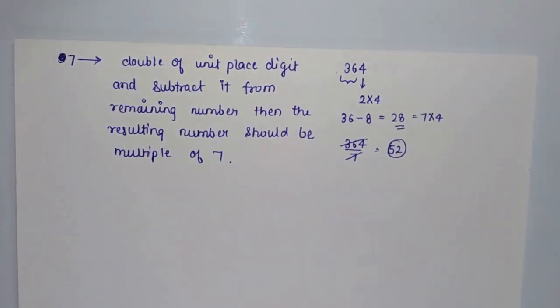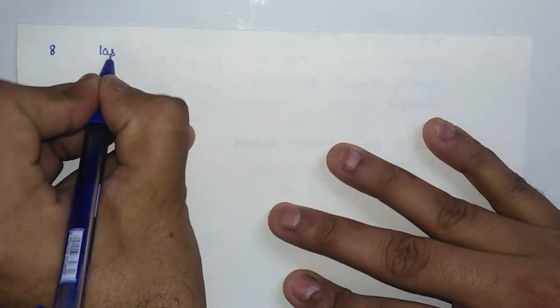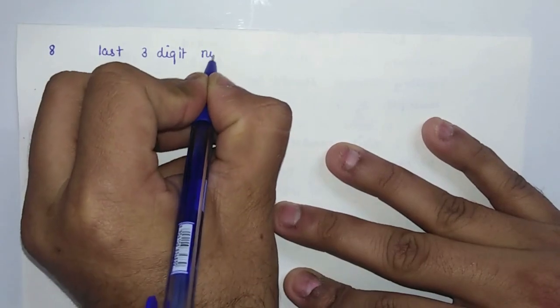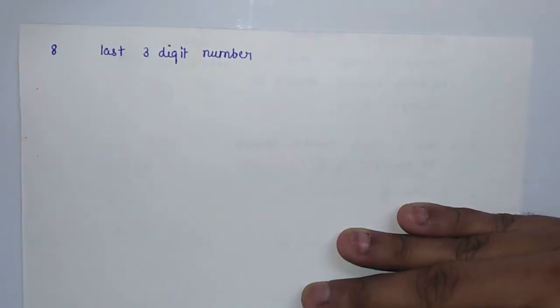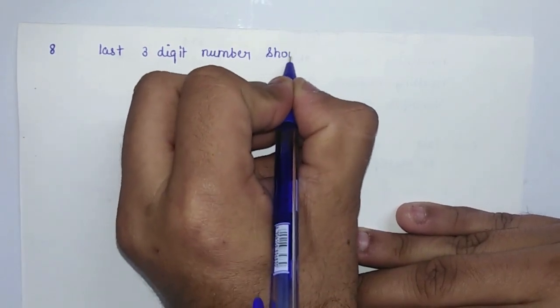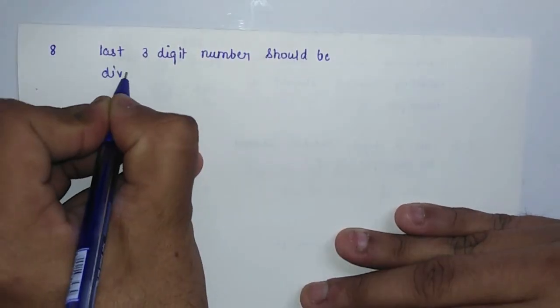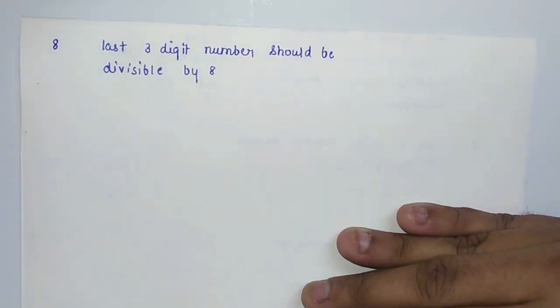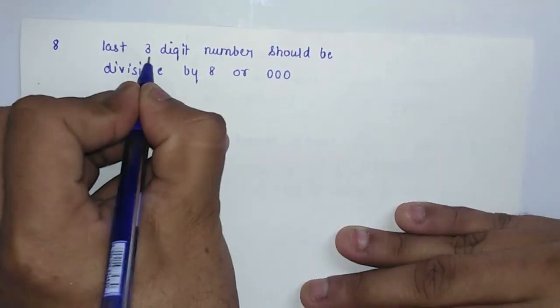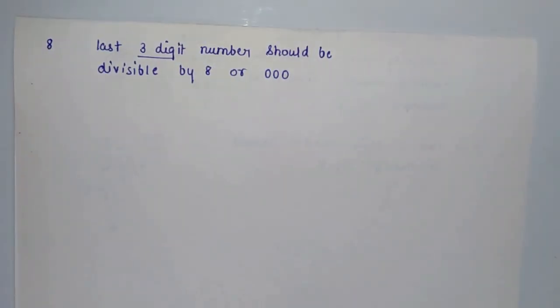The divisibility rule for 8 says that if the number formed by the last three digits of the given number is either triple zero (000) or divisible by 8, then the number is divisible by 8. This rule is very similar to the divisibility rule for 4, except for 4 we check the last two digits, while for 8 we check the last three digits.